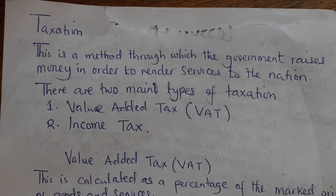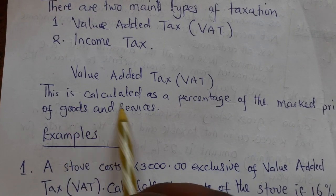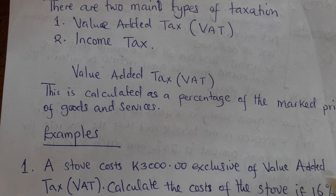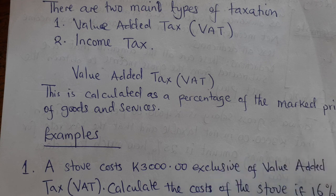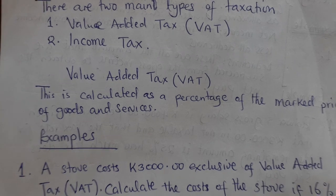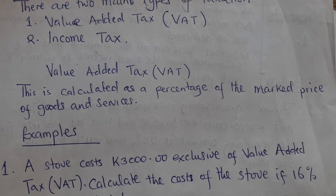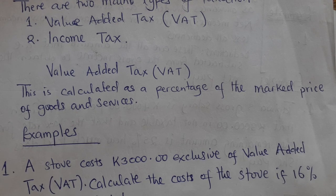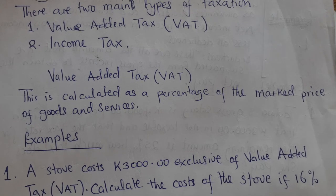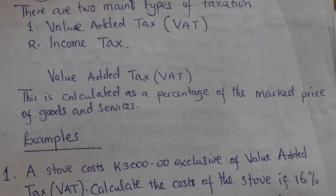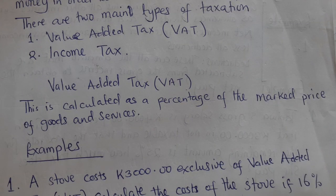In the next lesson we will look at income tax. Value added tax, VAT, is calculated as a percentage of the marked price of goods and services. For anything that you buy from a shop, there is tax involved — money that goes to the government. If you go to Pick and Pay or Choppies, look at the receipt and you will see that there is VAT there.